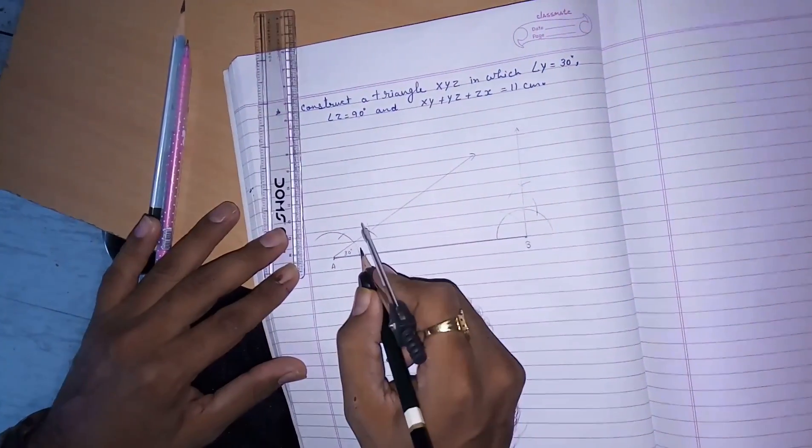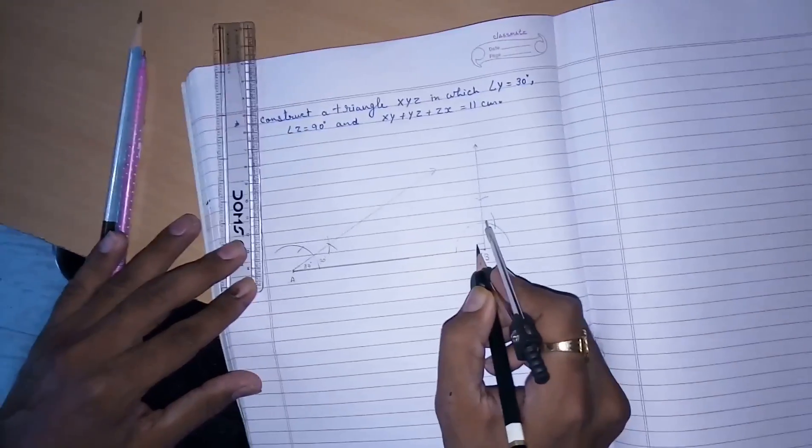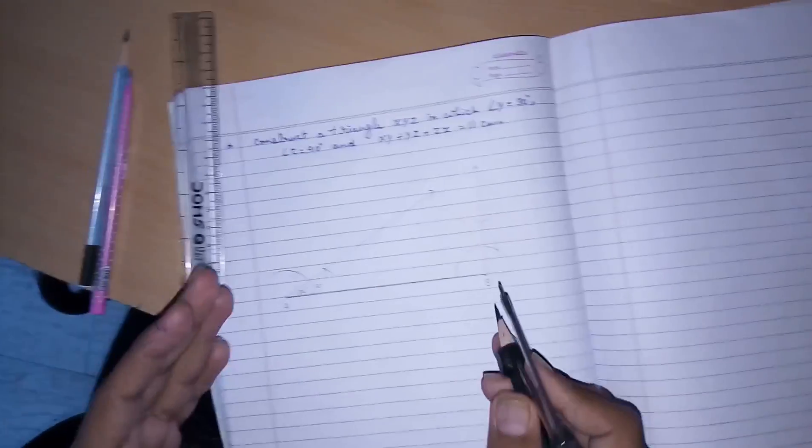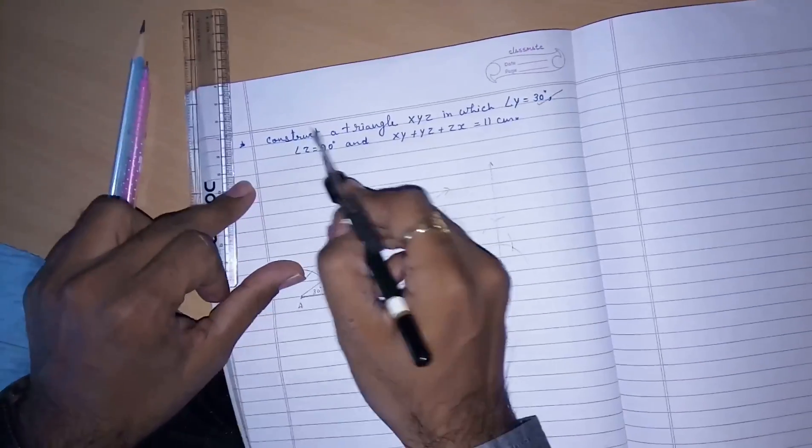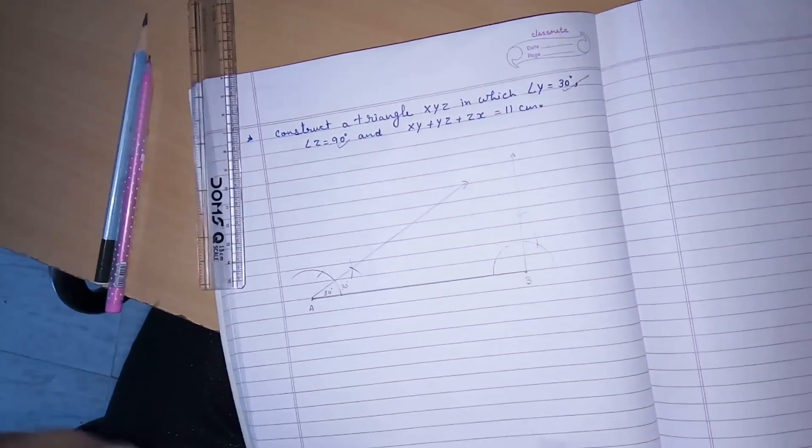First we had constructed 30 degrees, then 90 degrees. This is the first step, what they had given us, 30 degrees and 90 degrees, so we had drawn 30 degrees and 90 degrees.